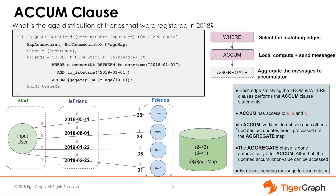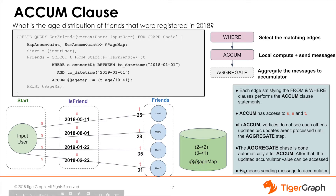In the accumulator clause, vertices do not see each other's updates because updates are not processed until the aggregate step. The aggregate phase is done automatically after the accumulator clause, after which the updated accumulator value can be accessed. Finally, each accumulator is updated using the plus-equals sign.